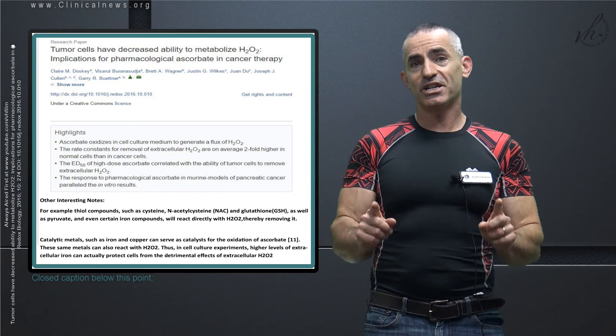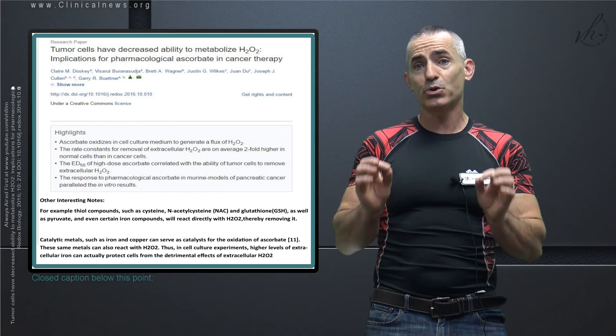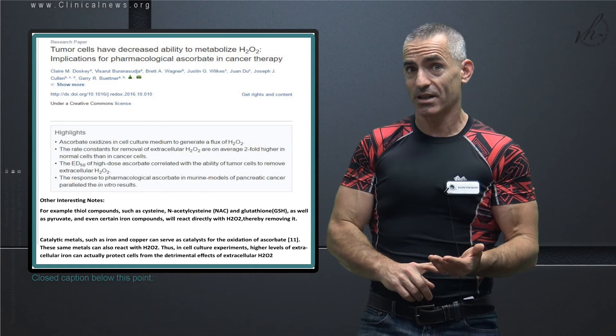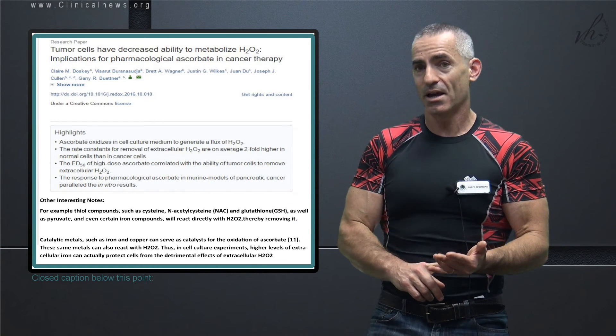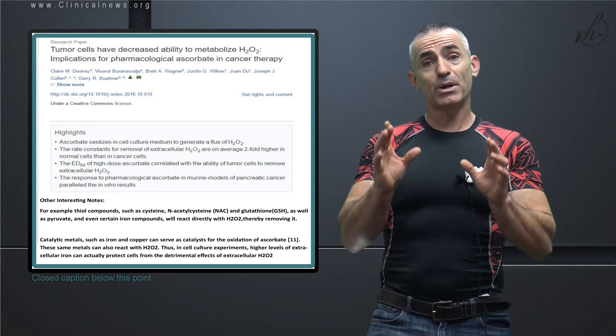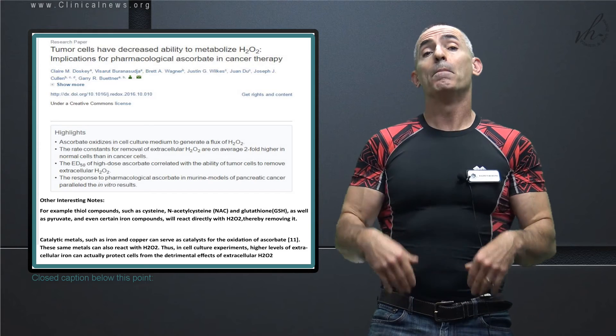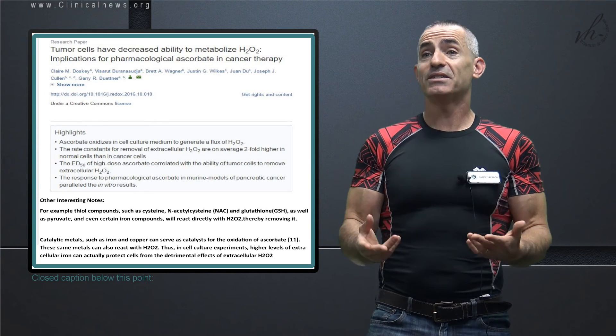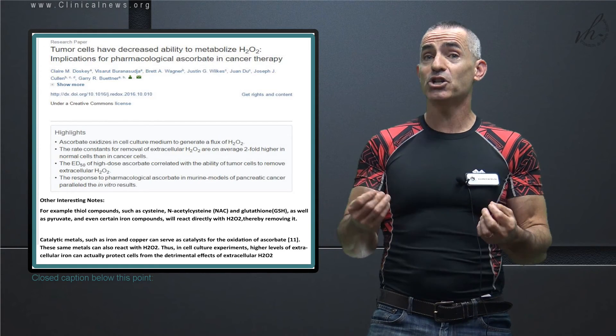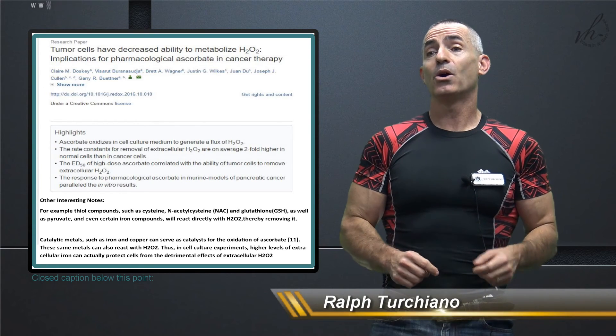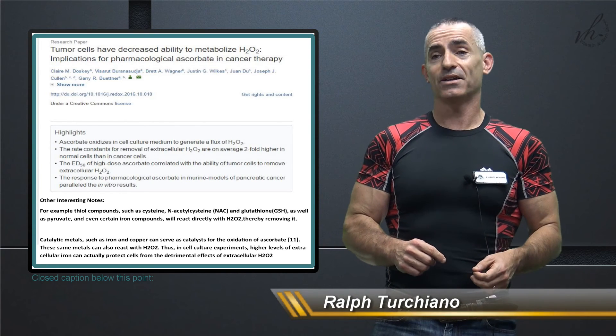But incredible, vitamin C potentially can be a very powerful tool in the use of treating, in this case, pancreatic cancer cell lines, which are not easy to treat. However, again, it's preliminary research, it's an animal model, has to be eventually carried out to humans. But in the meantime, vitamin C is looking like it may have the potential to be a powerful tool intravenously in the treatment, or safe treatment of certain cancers.